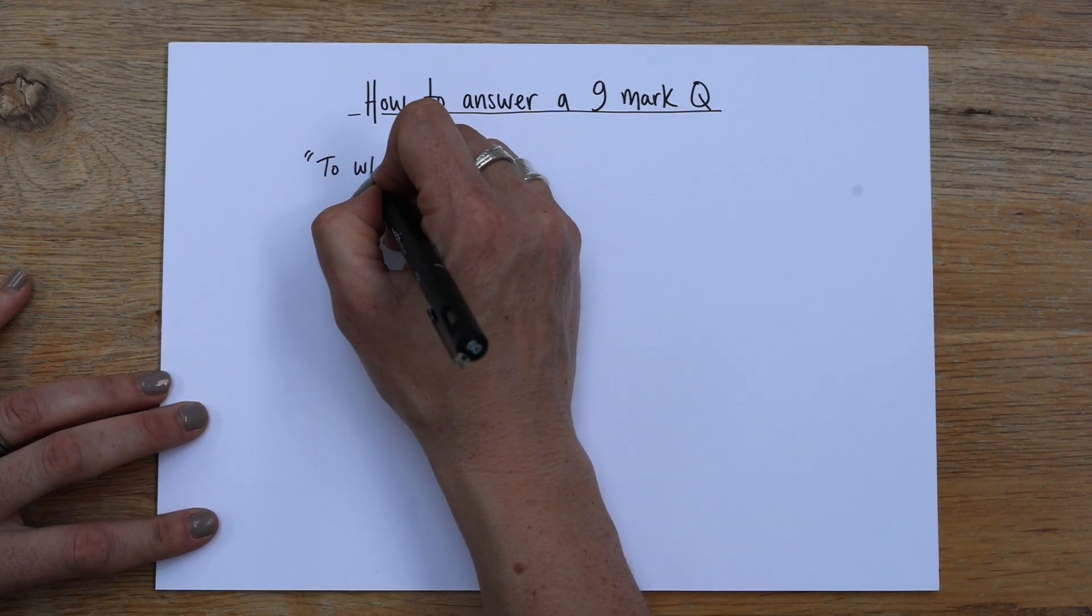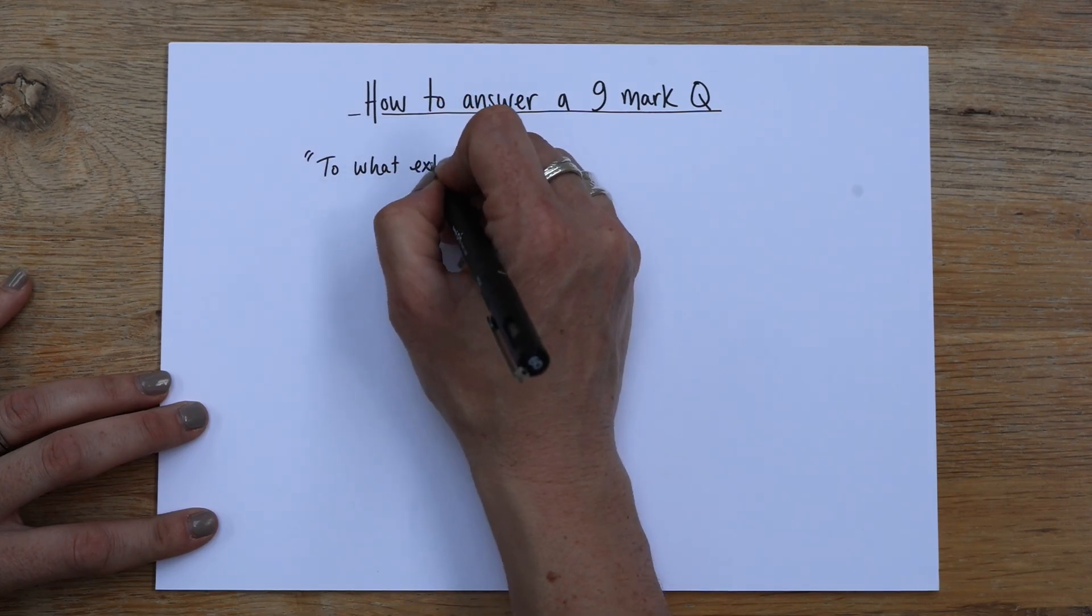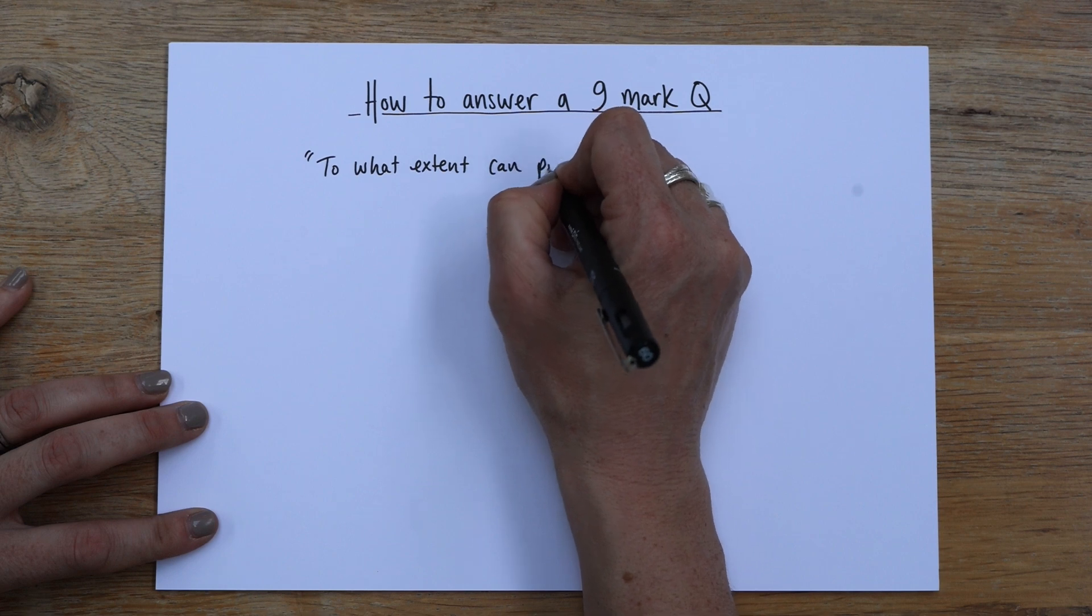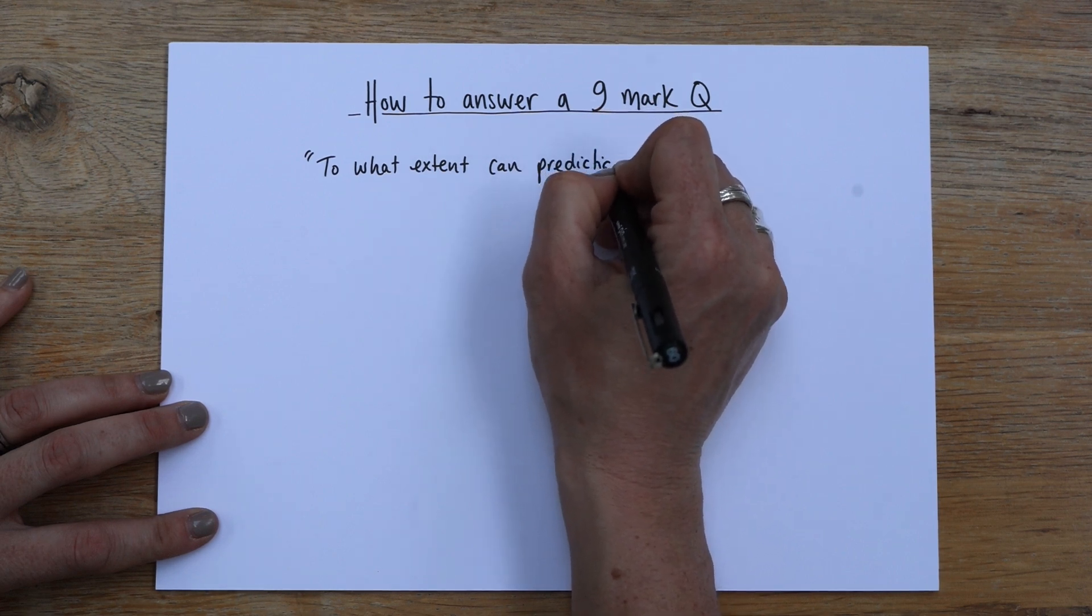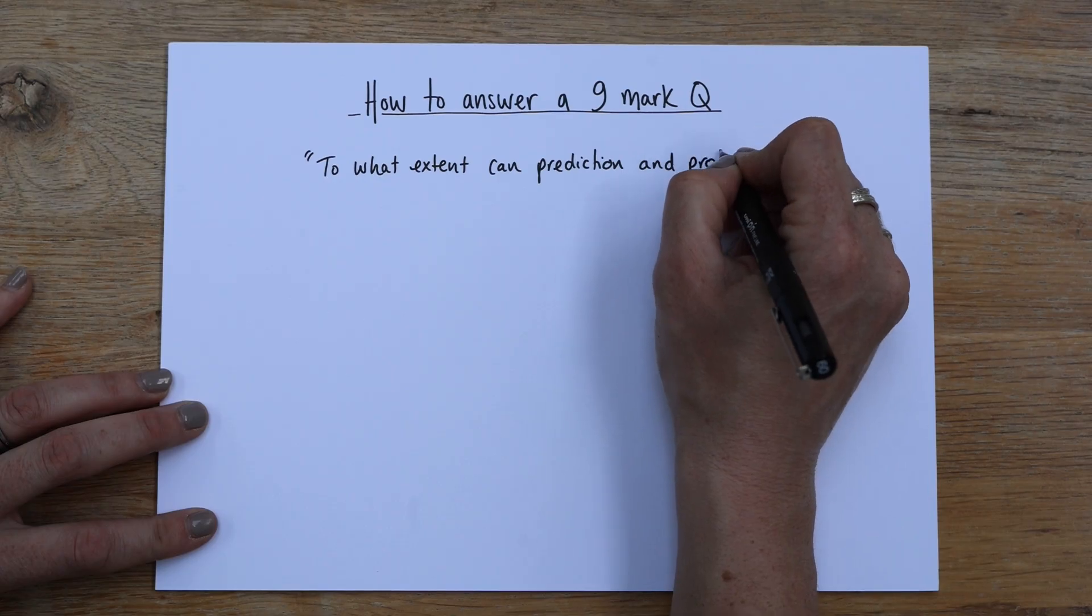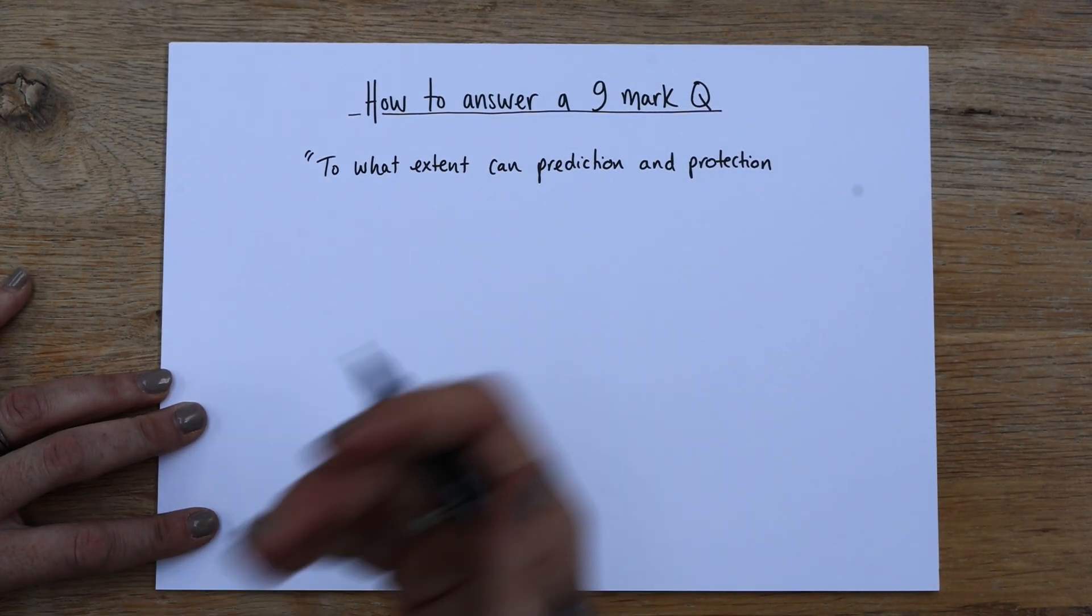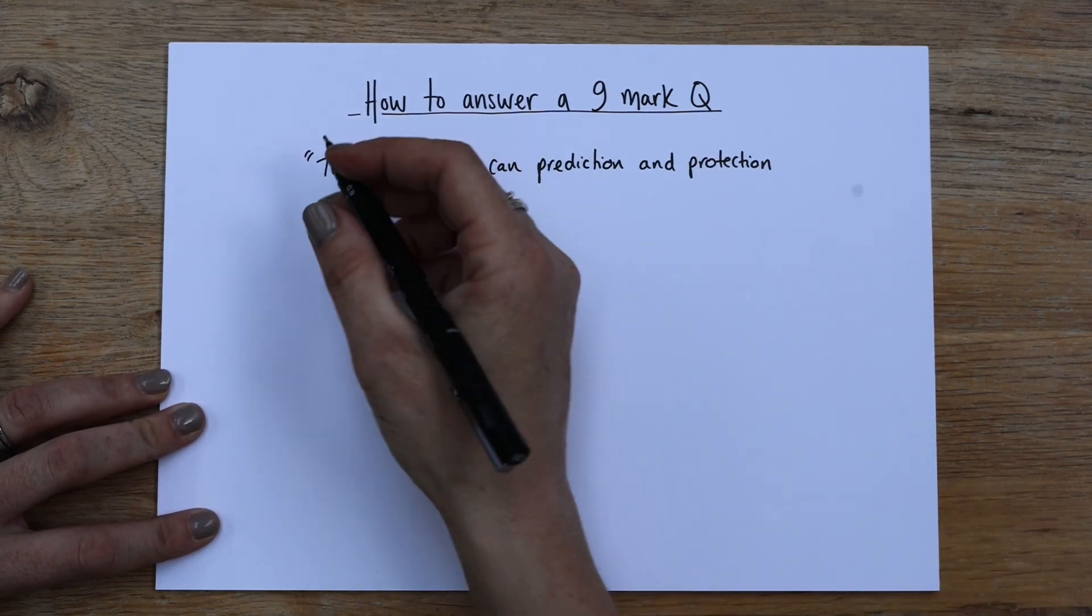So this question says to what extent can prediction and protection, so this is to do with tropical storms but it could be earthquakes, could be volcanoes.